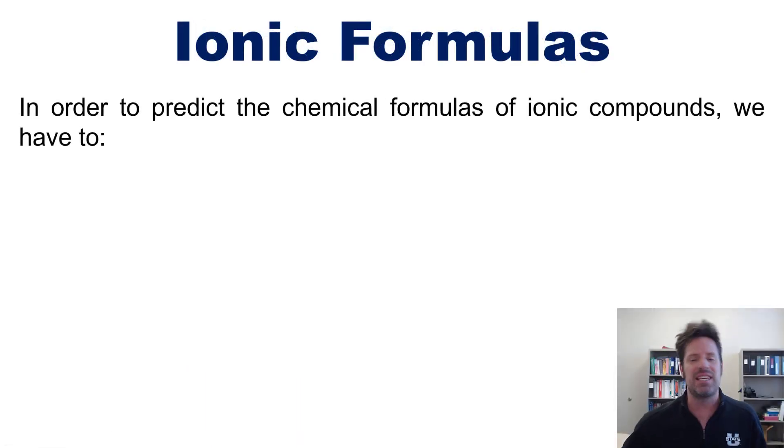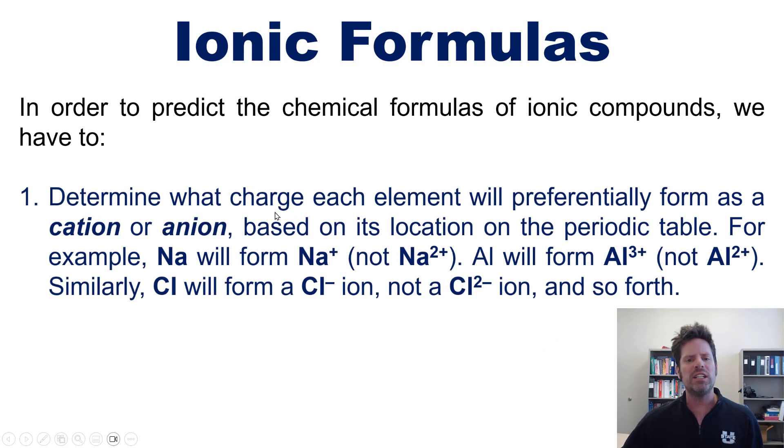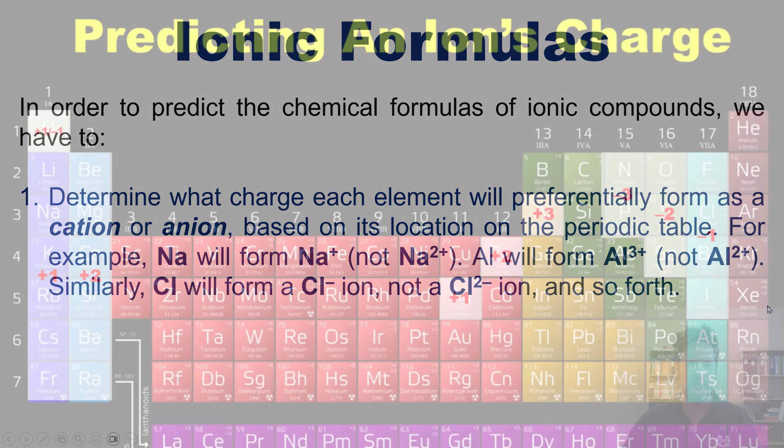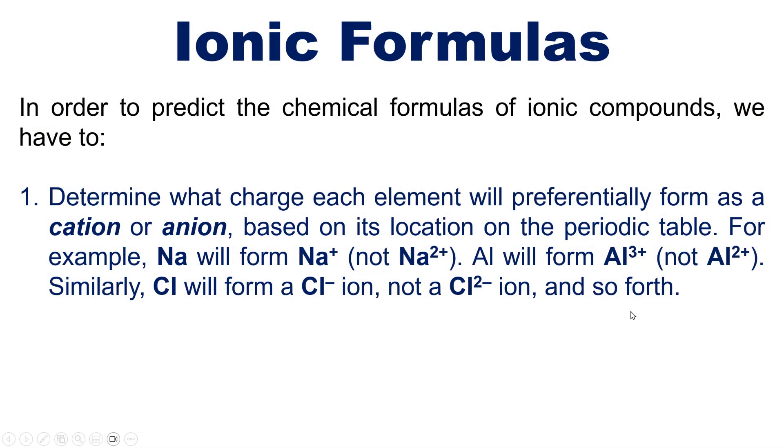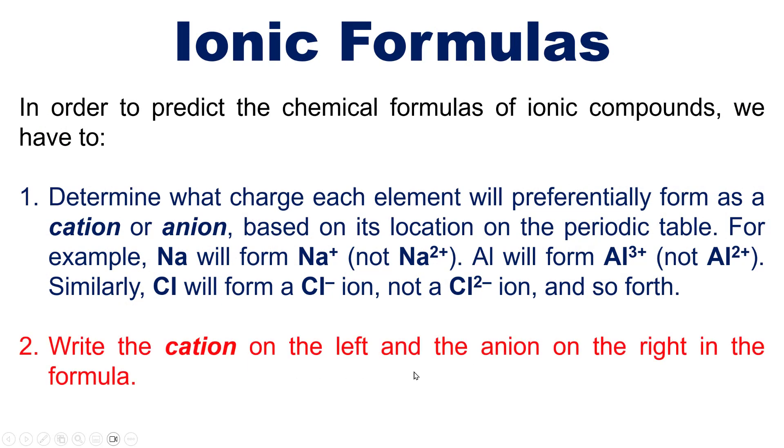Now in order to predict the chemical formulas of ionic compounds, we have to first determine what charge each element will preferentially form as a cation or anion based on its location on the periodic table. For example, sodium will form Na+ not Na2+ because sodium is in column one. Aluminum will form aluminum 3+ not aluminum 2+ because it's in column three. Similarly, chlorine will form Cl- anion not Cl2- because it's in column 7A, and so forth.